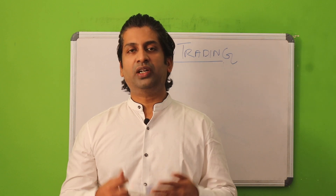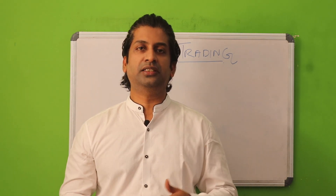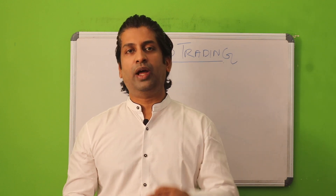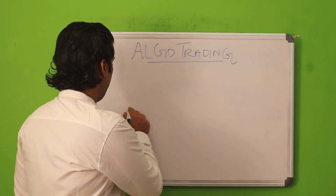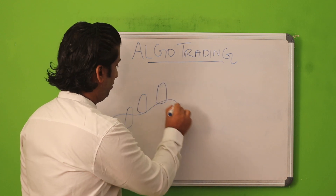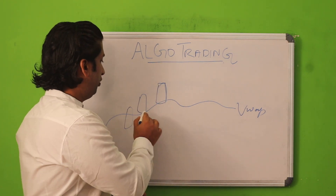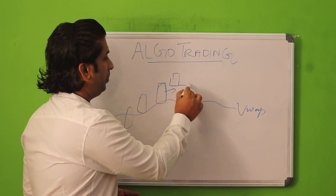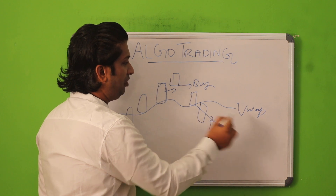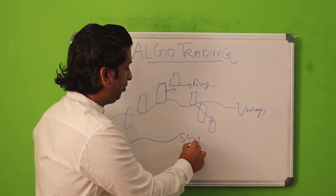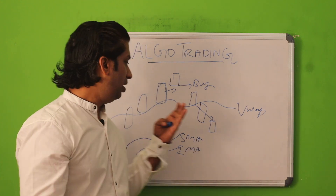Before getting into detail about what is algo trading, let's see what you do with technical indicators. Most of you might have been using technical indicators, waiting for so long for the indication to happen and then placing orders. For example, say these are the candles and I am drawing this VWAP line. You will be waiting for a long period for the candle to cross above the VWAP to place a buy order. If you are going to place sell orders, it should come below the VWAP line. The same applies for SMA simple moving average and EMA — you have to wait and sit in front of the computer for the orders to execute.